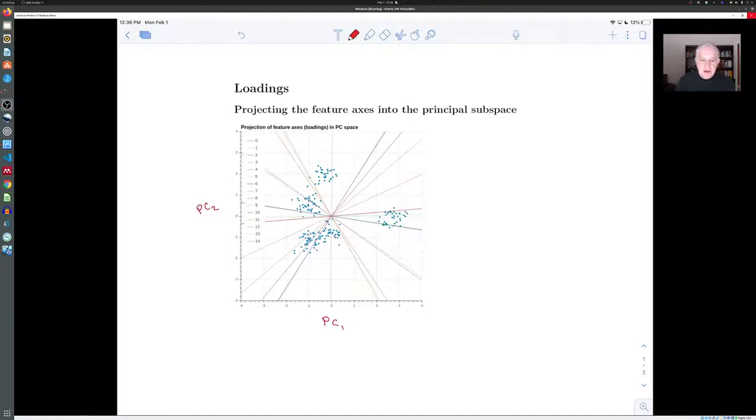And so for example, if you look at this line, which corresponds to one of the original features, you see that if you look at the projections of these points onto that line, there's going to be a group of them over here and another group of them over here. And so for this feature, you might expect to see that the points are split into two groups. And if you think back to the histogram that we looked at, we did see that for some features, the points were split into two groups.